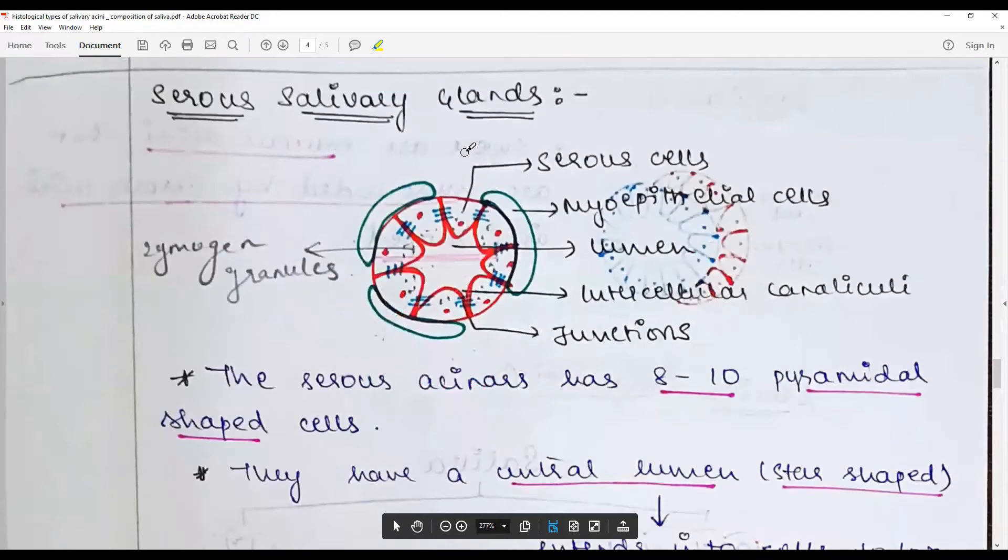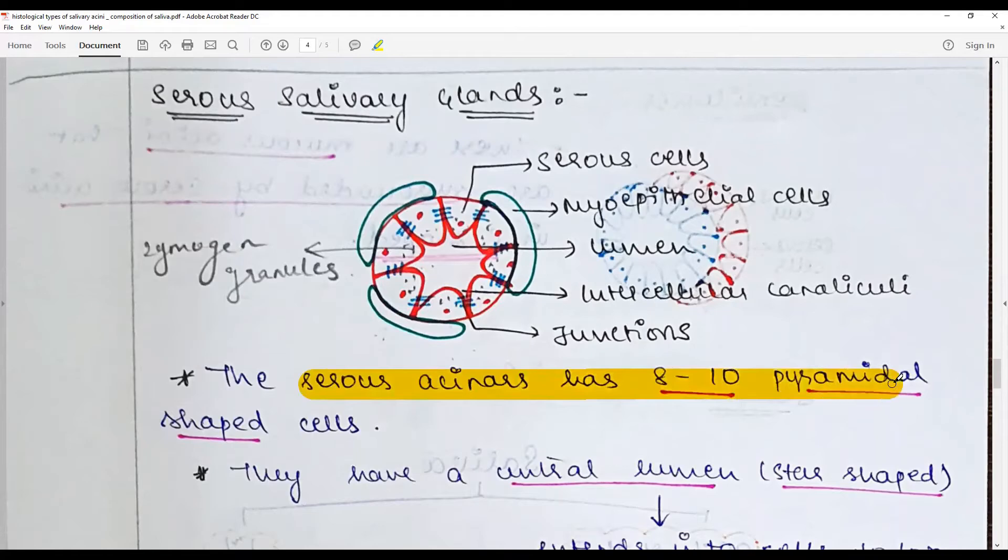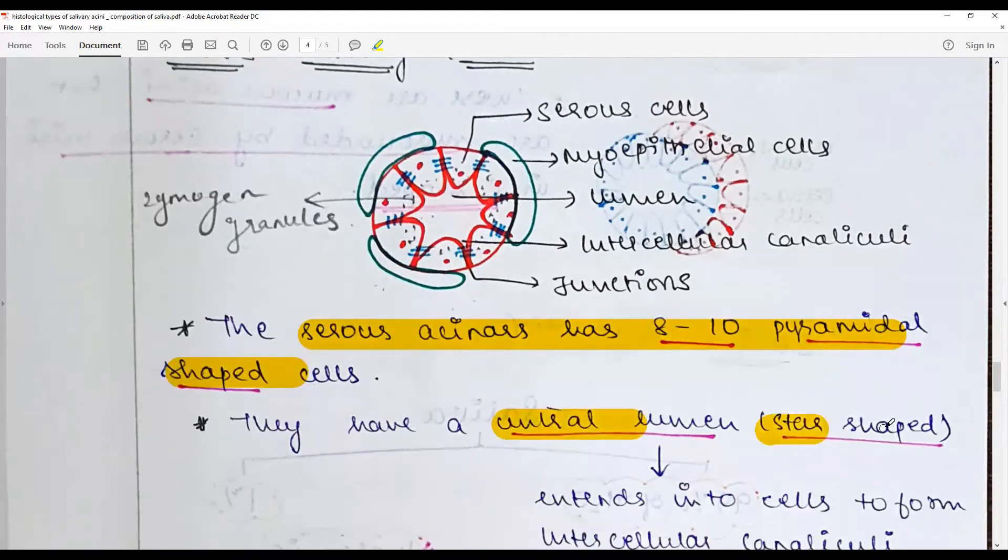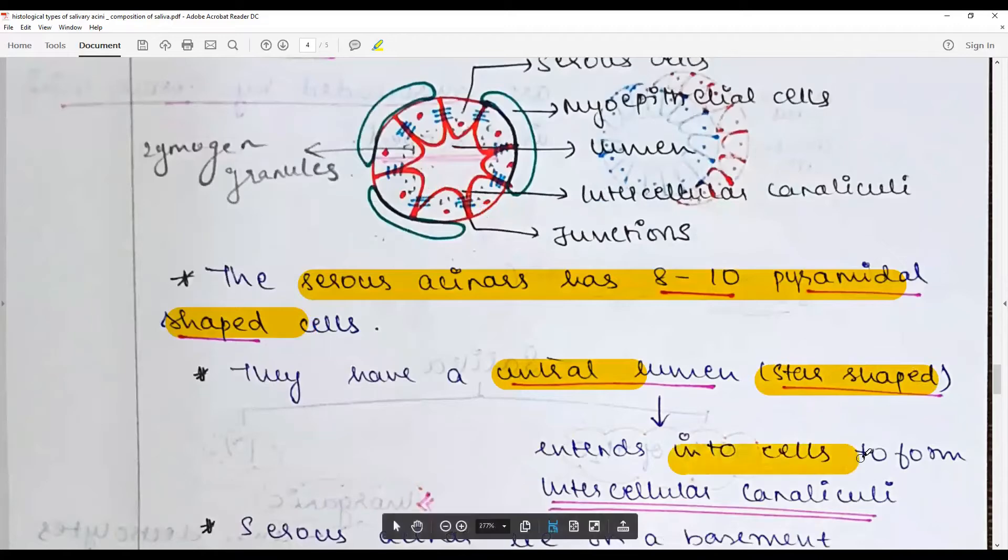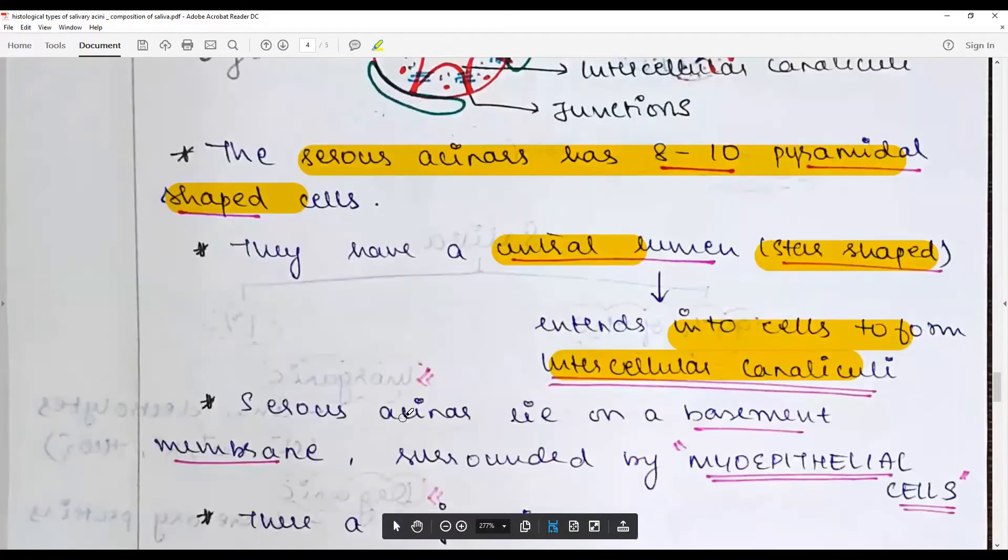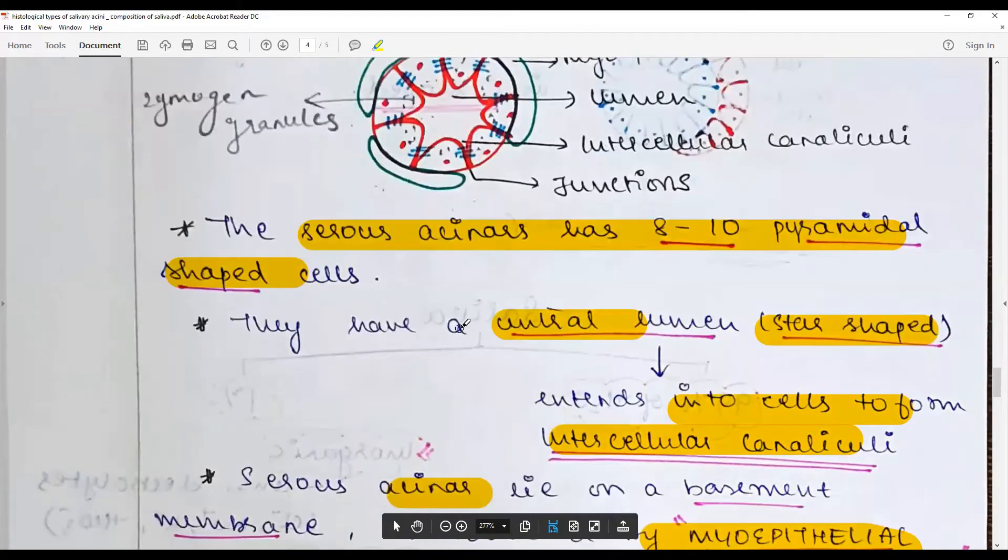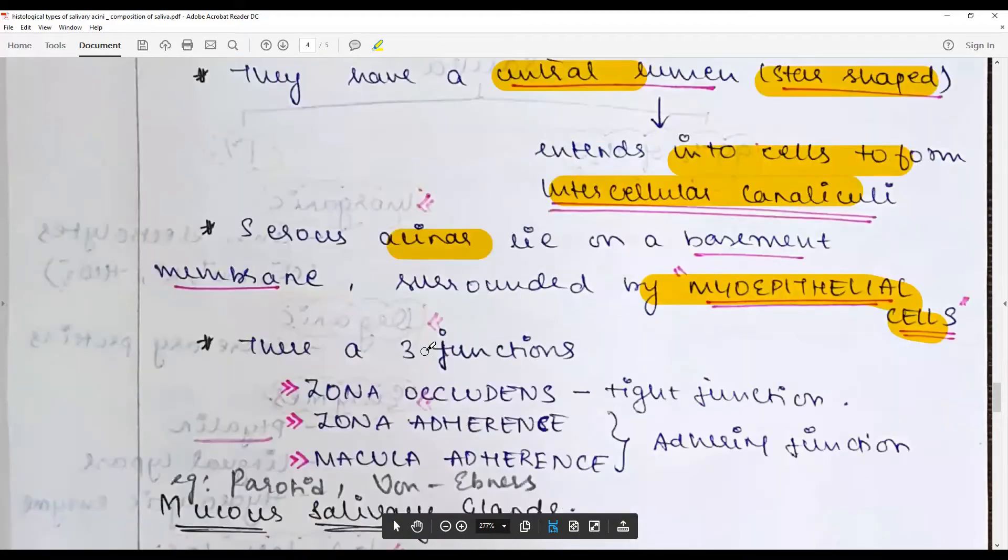The serous salivary gland, the acinar structure: the serous acinar has 8 to 10 pyramidal shaped cells with a central lumen that is star shaped which extends into the cells to form an intracellular canaliculi. The serous acini lie on a basement membrane surrounded by myoepithelial cells or basket cells that help the saliva to be squeezed out.